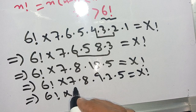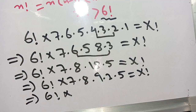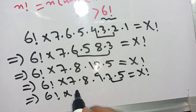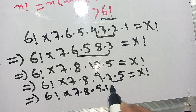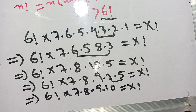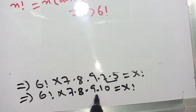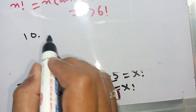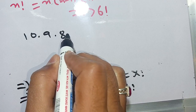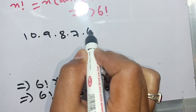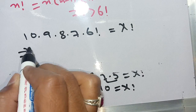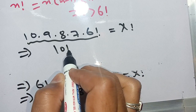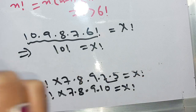In the next step, we combine 5 times 2, which becomes 10. So we have 6 factorial times 7 times 8 times 9 times 10 equal to x factorial. We can write this as 10 factorial equal to x factorial.